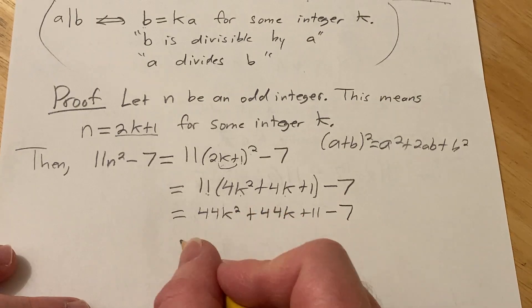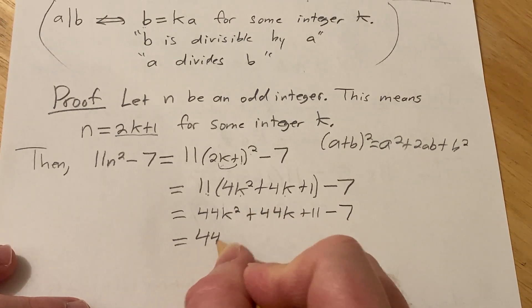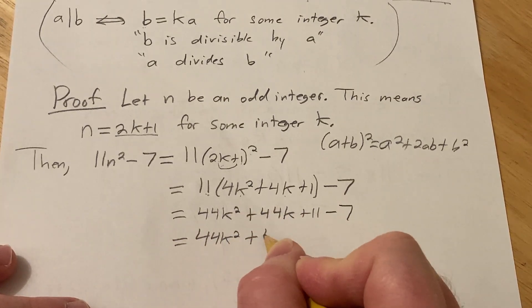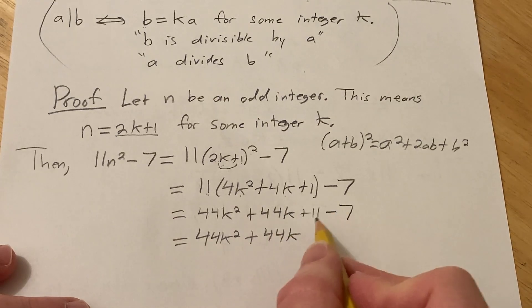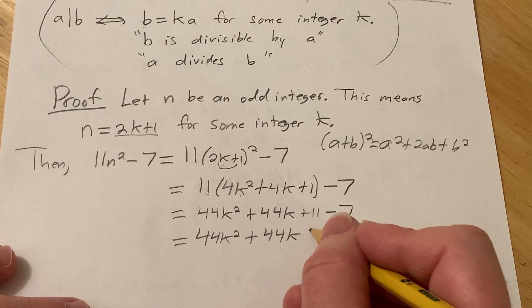Alright, I think it's starting to come together. So this is 44k² + 44k. And then 11 - 7 is 4.